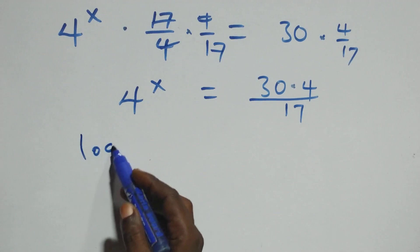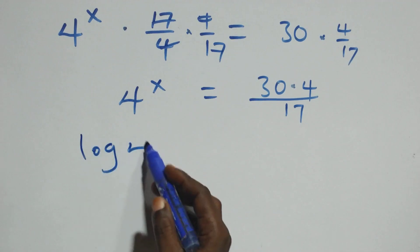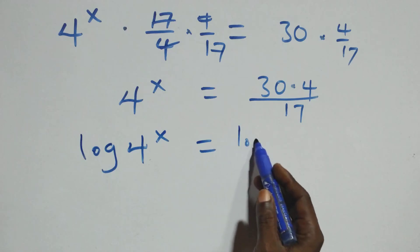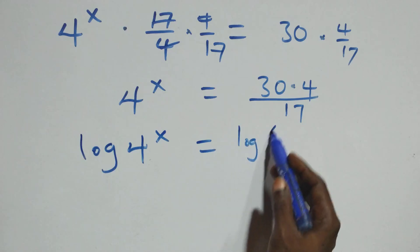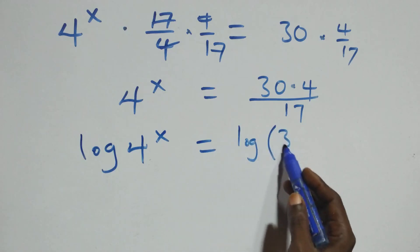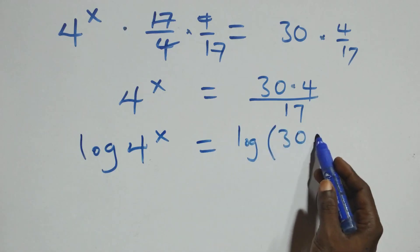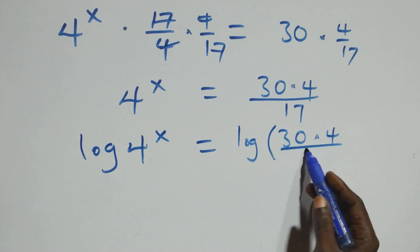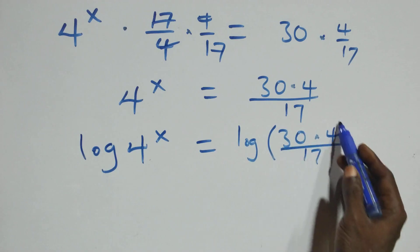We have: log(4^x) equals log(30 × 4 / 17).